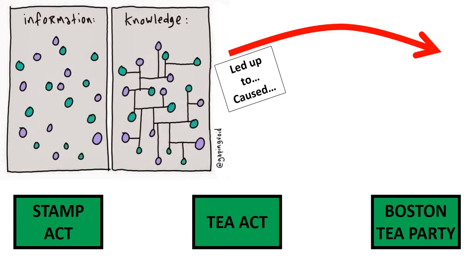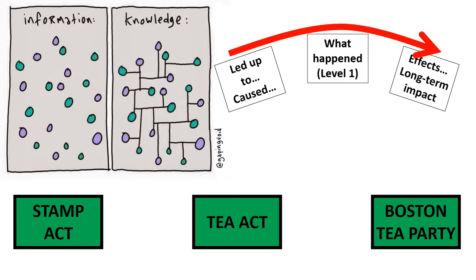Think of it this way: what led up to an event happening? Then you get into your level one writing where you tell me what actually happened or what the event was — you define or recall. But I want you to extend the information by telling me the long-term impact or the long-term effect. In the end, what happened as a result?